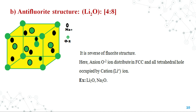The anti-fluorite structure is the reverse of the fluorite structure. All tetrahedral voids are occupied by cations, that is Li+ ions. This is seen in lithium oxide and sodium oxide structures. In the diagram, O2- is represented as a green ball, occupying all tetrahedral voids present in the structure.